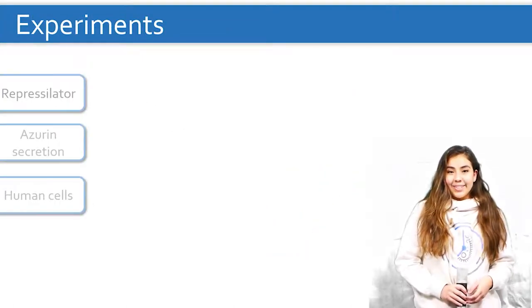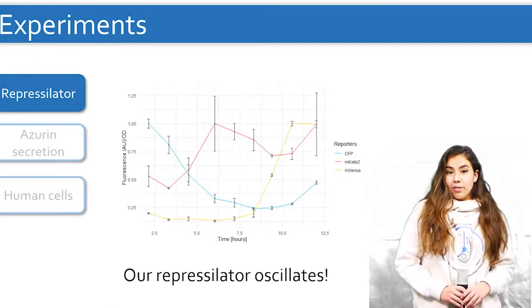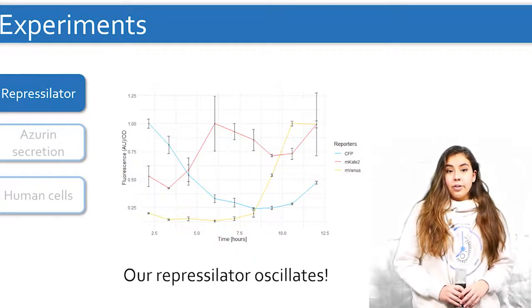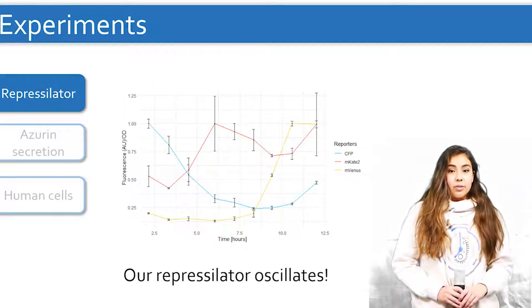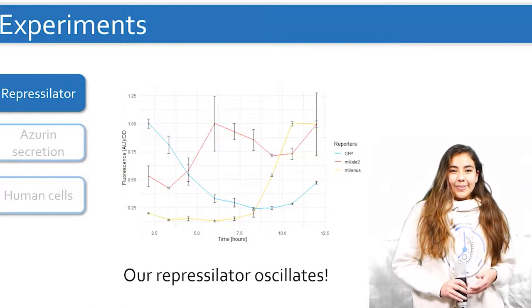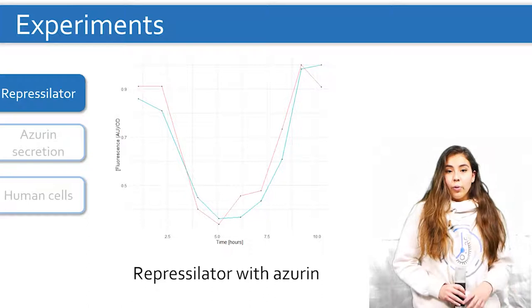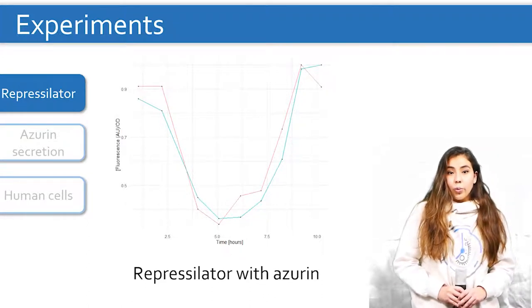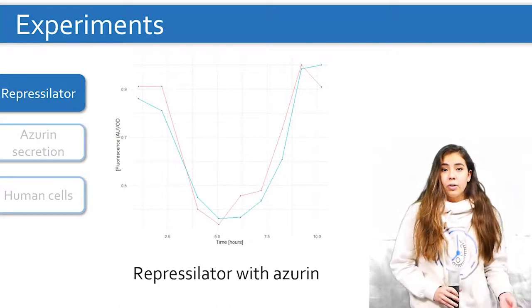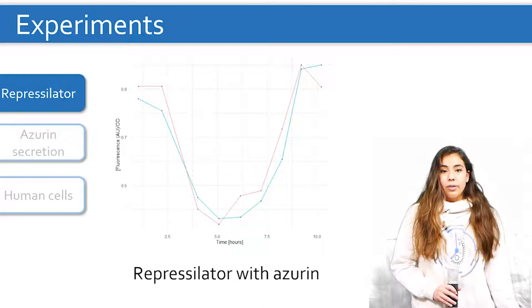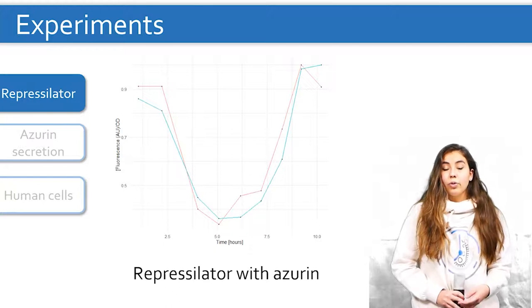To be able to observe oscillations, we coupled the circuit with fluorescent reporter proteins. We see, for example, the CFP, the blue line, starts at high levels and drops until it picks up again after an eight-hour time point. The other proteins also show oscillations, but in a different phase. We wondered if adding azurin would disrupt the oscillations. Therefore, we compared the unmodified repressilator with the one where we added azurin. When we tested, we saw no difference with the pattern of the unmodified repressilator. In fact, in the graph shown here, we see that both show the same oscillation for one of the reporters.